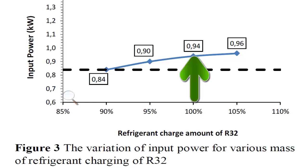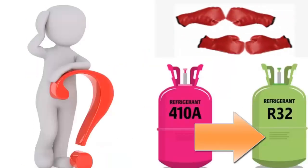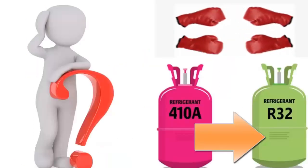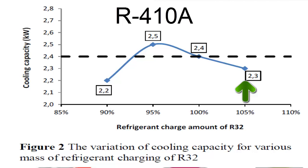6. If we add more R-32 than the original R-410A amount, the cooling capacity will decrease.